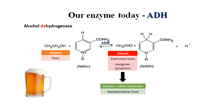Before I show you the demo of this experiment, here is a quick recap to the process of alcohol oxidation. We know that alcohol is a toxic molecule which must be metabolized in the liver. In your liver you have the enzyme alcohol dehydrogenase that will convert ethanol into acetaldehyde by removing a hydrogen, forming this aldehyde molecule.